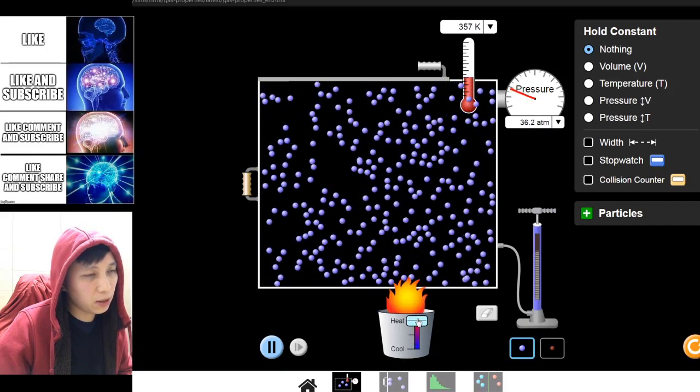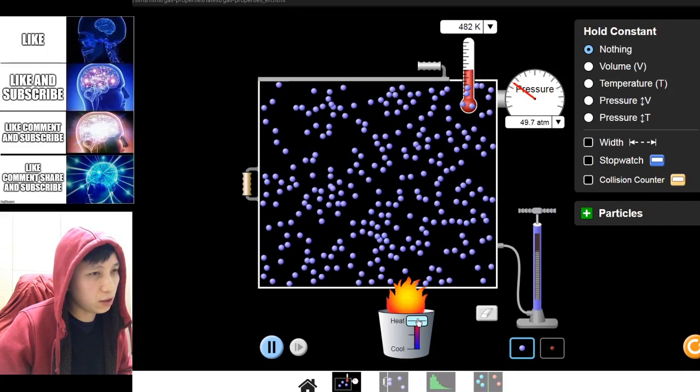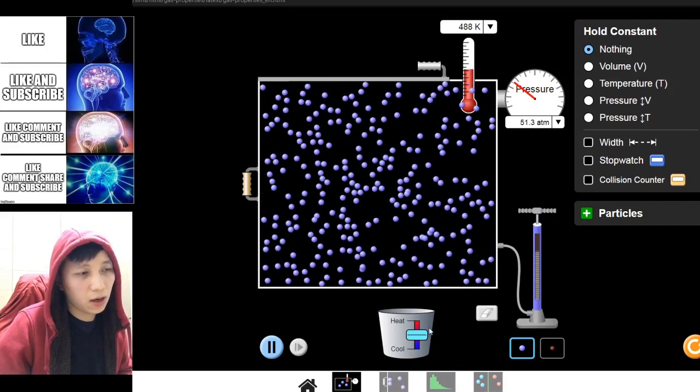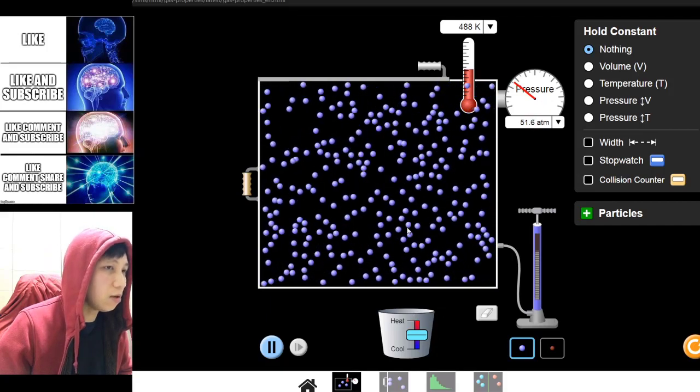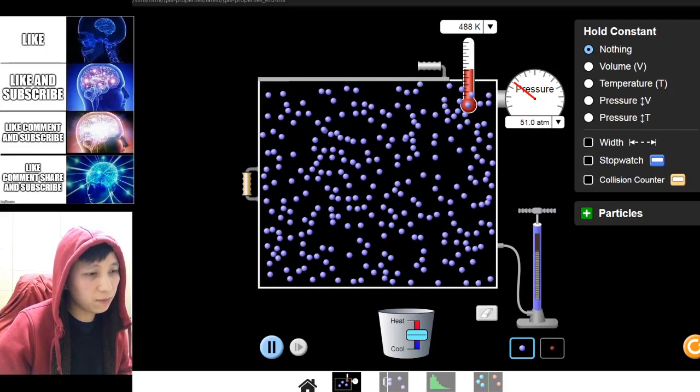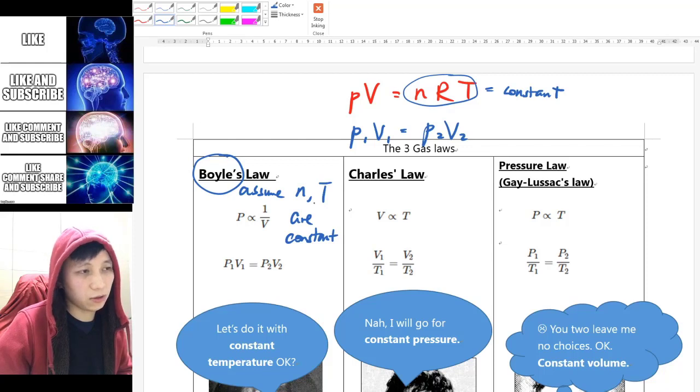Also for the temperature, if you change it, you can see at the bottom you can heat them up. And now you can see the pressure would increase as well. So without changing the volume, if you only change the temperature, of course it will also affect the pressure. And so that's why for Boyle's law, it requires you to have a fixed amount of gas molecules and also fixed temperature as well.